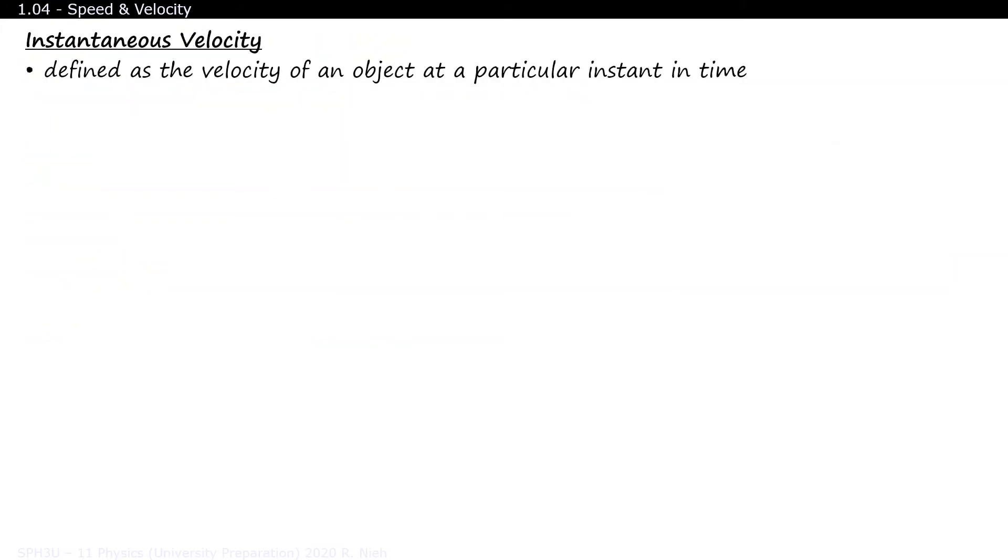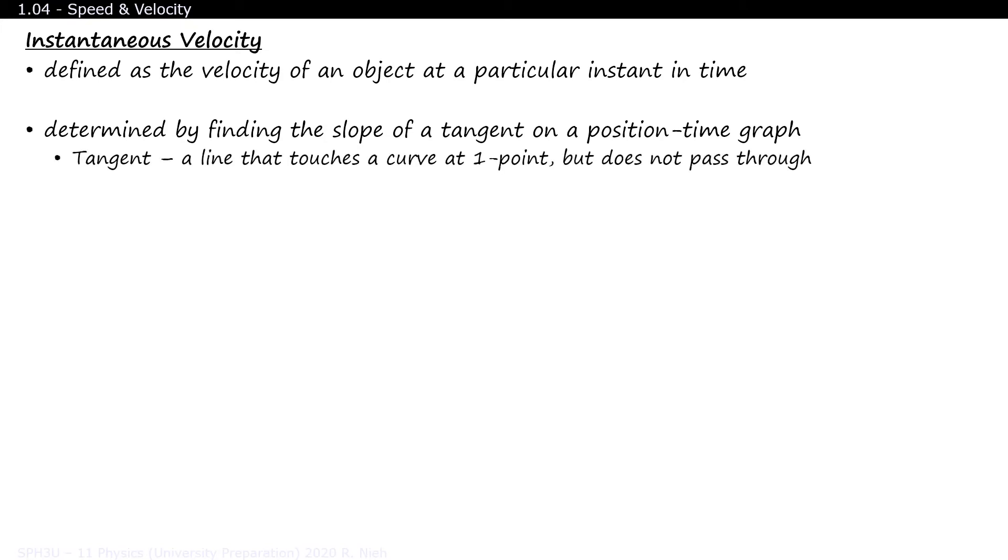Instantaneous velocity is defined as the velocity of an object at a particular instant in time, and can be found by finding the slope of a tangent on a position-time graph. A tangent is a line that touches a curve at one point, but does not pass through. Let's say we want a tangent drawn at the top of the circle. When we draw the line, it can only touch the curve once and only once.